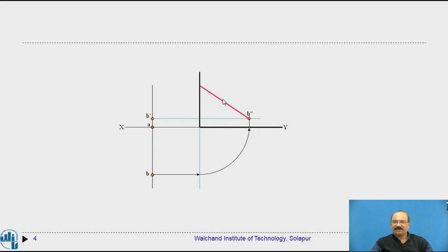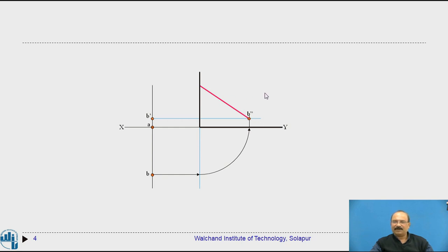In the problem, the summation of theta and phi is given as 90 degrees. Theta is the angle made by the line with the horizontal reference plane, and phi is the angle made with the vertical reference plane. When their summation is 90 degrees, you follow the profile plane method. The true length is given as 75 mm. If you move upward the length increases; downward, it decreases. Here it is taken as 75 mm.